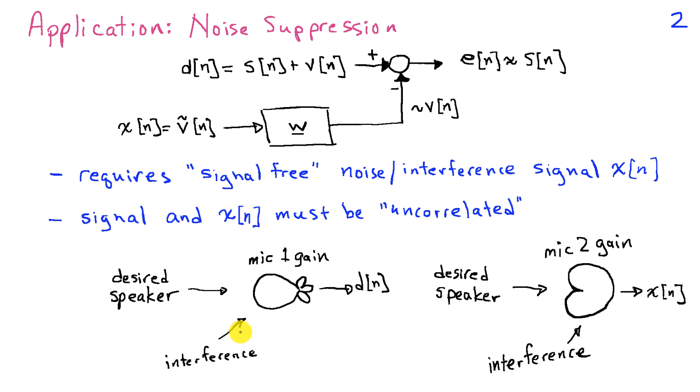So the sum of the desired speaker and the interference results in our signal d of n. Now since we know where the desired speaker is located, we can introduce a second microphone whose gain is zero in the direction of the desired signal. The desired signal doesn't show up in the output of this microphone, but the interference, which comes from some other direction, does show up.